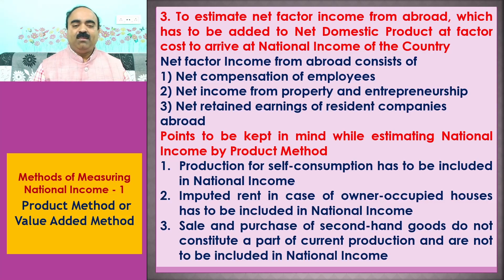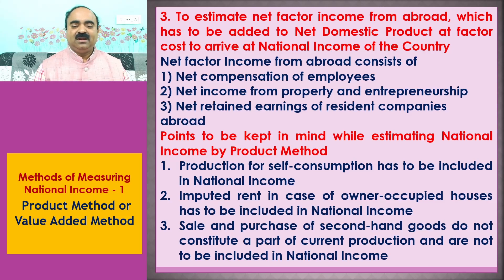Points to be kept in mind while estimating national income by the product method: 1. Production for self-consumption has to be included in national income. 2. Imputed rent in case of owner-occupied houses has to be included in national income. 3. Sale and purchase of second-hand goods do not constitute a part of current production and are not to be included in national income.